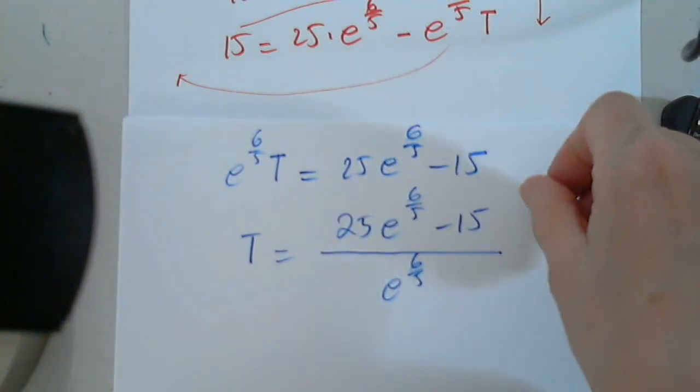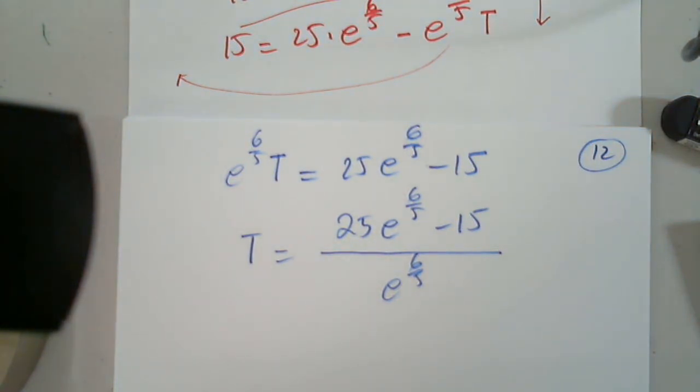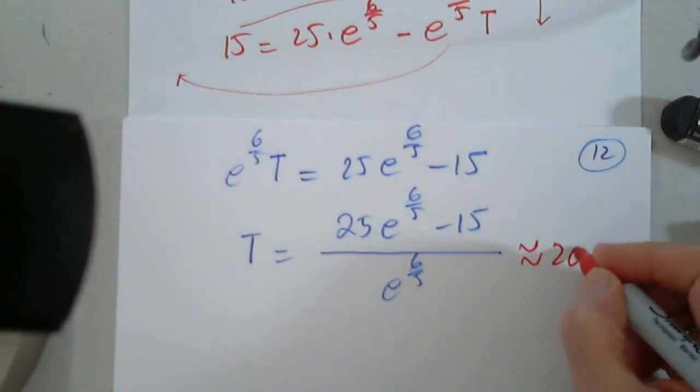Careful when you put it in. Put parentheses. So let's put it in and get the temperature. You can always go back and check if I plug it in the function. Parentheses around the top. 25 times e^(6/5) close, minus 15, and divide by e^(6/5). Couldn't they find anything uglier than this? I'm checking to make sure that I enter it correctly. 20.5 degrees Celsius.